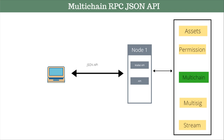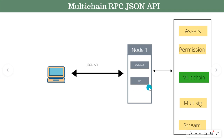This diagram explains the architecture which we already saw at the start of this training, where you understand that MultiChain is running on one node and different nodes can connect to that MultiChain main node. The first section shows the MultiChain instance where you have all the assets stored, permissions defined, wallet signatures defined, and all the streams. To that MultiChain instance, you can have multiple nodes connected — right now I'm showing only one node, but in real time you can have more than one.